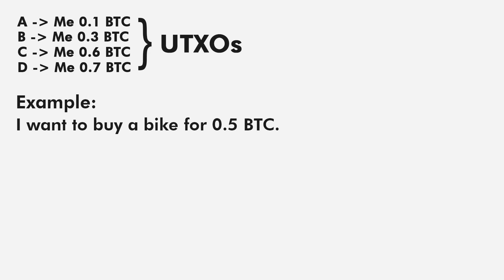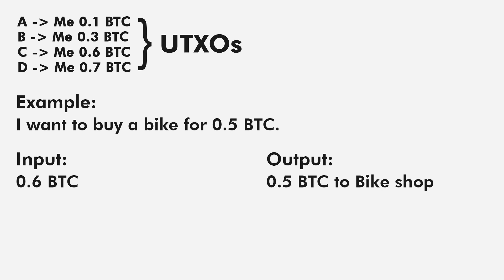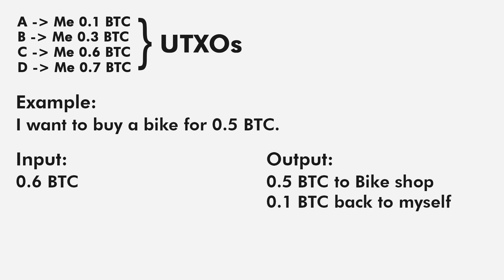Suppose I want to buy a bike for 0.5 Bitcoin. Since I need 0.5 Bitcoin, I will choose this 0.6 Bitcoin from C as input. As output, I will send 0.5 Bitcoin to the bike shop. There is a rule that there cannot be any unused output, so anything that goes into input, the full amount must be spent — basically there cannot be any change left over. You have to send all 0.6 Bitcoin, but you can send it to different participants. So what you do is send 0.1 Bitcoin back to myself.